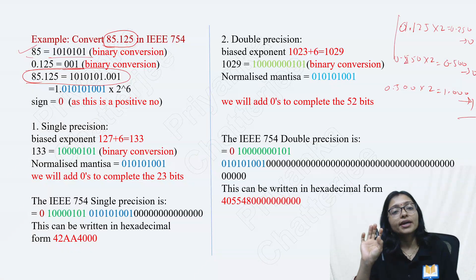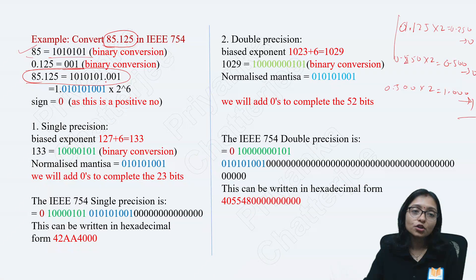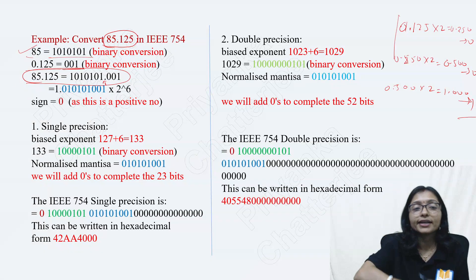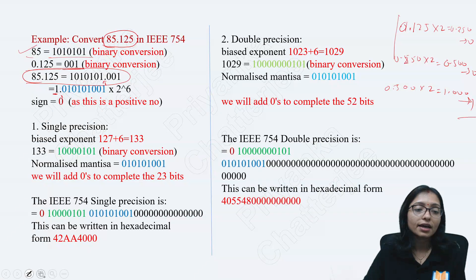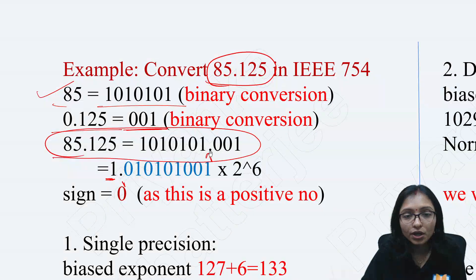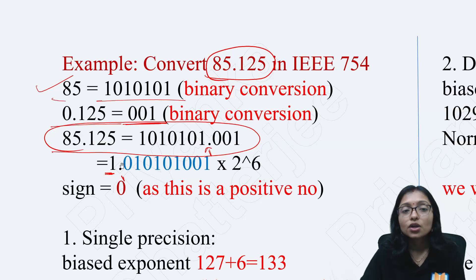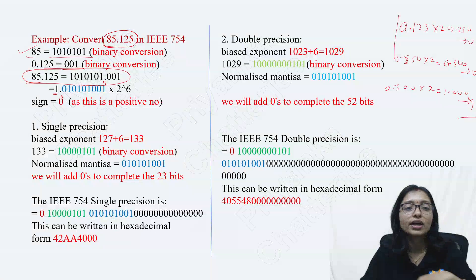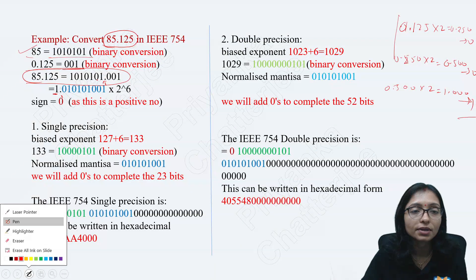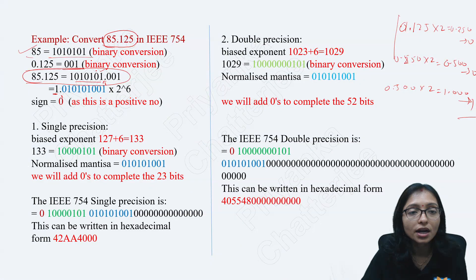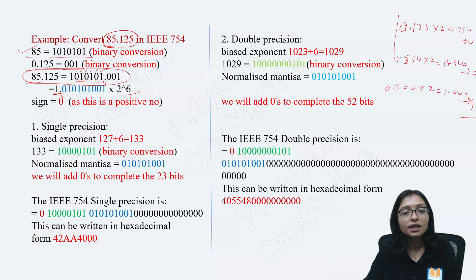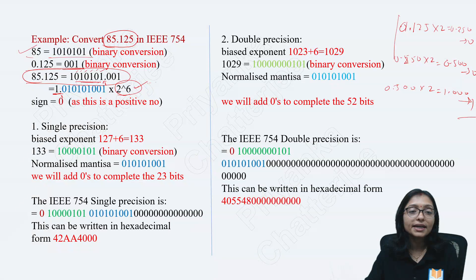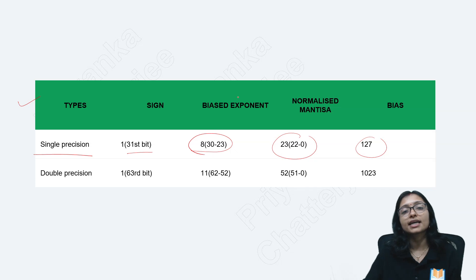Now here is the game: you have to move the decimal point just after the first 1 bit. Where was the point? The point was here — I am moving it just after the first 1. So how many bits are you moving? That is your exponent. You are moving 6 bits. That is why you are doing multiply by 2 to the power 6. This power of 6 depends on how many bits you shift — that gives you the biased exponent.